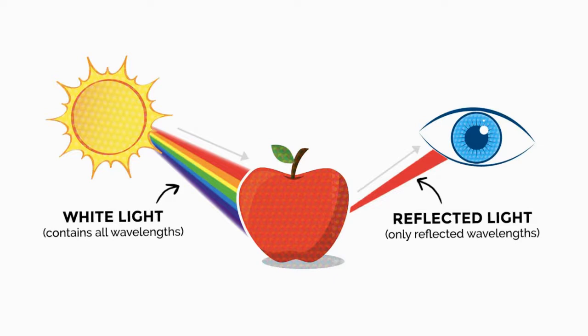How does color work? What's happening when I look at a red apple? Why do I see it as being red? Well, it's quite simple. When the sun shines its light down on Earth, that light contains all of the colors of the visible spectrum. Within the white light of the sun are all the different wavelengths of all the colors that we see around us. What happens when that white light hits an apple is the apple is absorbing all of those wavelengths of light, with the exception of the color red.